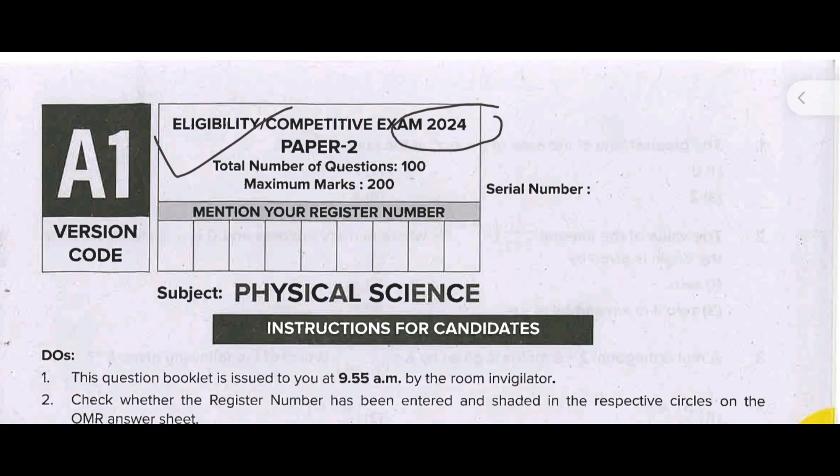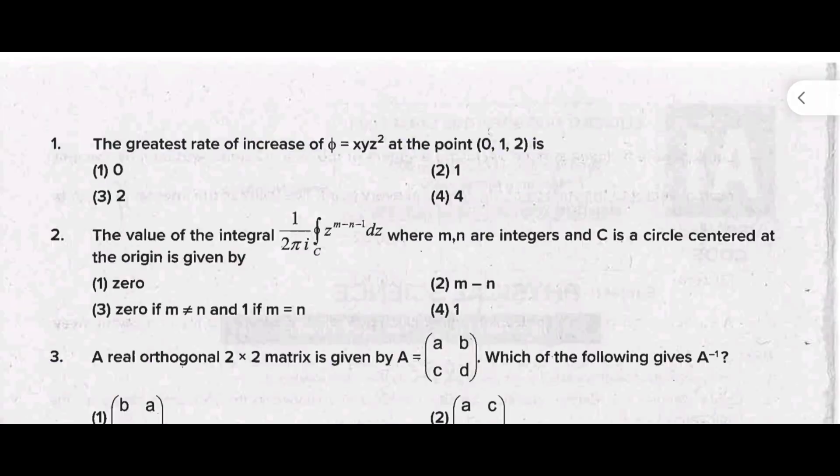Now I am telling the key answers of A1 version code question paper. Here, the first question is: the greatest rate of increase of f equal to XYZ square at the point (0, 1, 2) is - the suitable answer for this question is option 4, the value is 4.